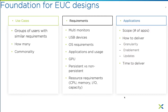When defining requirements, consider whether users need multiple monitors, USB devices like storage keys or signature pads, OS requirements — hopefully everyone has moved to Windows 10 — application needs, GPU requirements, and desktop type. Some use cases are a great fit for non-persistent desktops; others need persistent. Obviously, resource requirements like CPU, memory, and I/O matter too. Flush out what makes sense for your organization and check all the boxes.